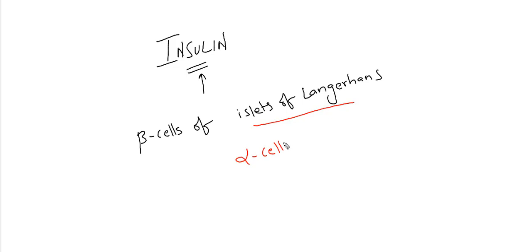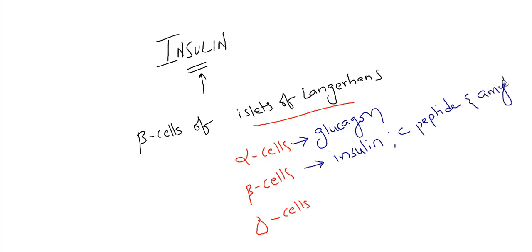The islets of Langerhans in the pancreas have different types of cells: alpha cells, beta cells, and delta cells. Alpha cells principally secrete glucagon. Beta cells secrete insulin as well as C-peptide and amylin. Delta cells secrete somatostatin and gastrin hormones. Beta cells are the major composition of these islets of Langerhans.